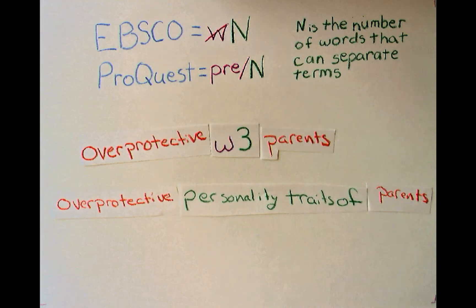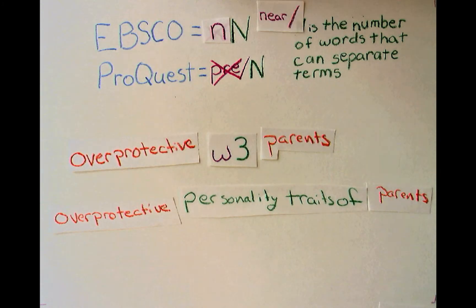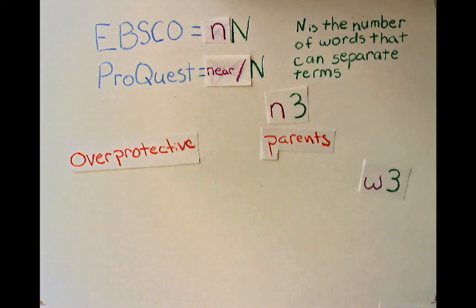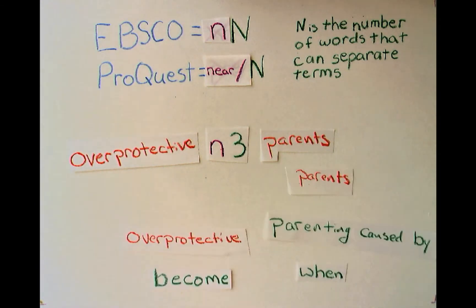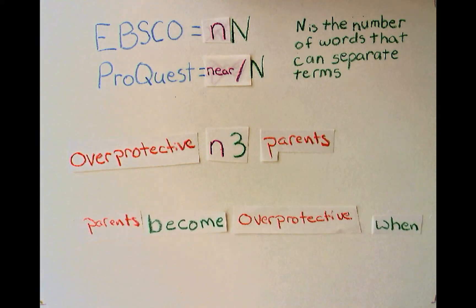Now sometimes you want to retrieve phrases in which order doesn't matter. For that, EBSCOhost uses NN and ProQuest uses near-slash-N. Now you can grab the terms in any order so long as they're within a certain number of words. So search for overprotective N3 parents receives texts that say parents who are overprotective, overprotective parenting caused by parents, parents become overprotective when, and so on.